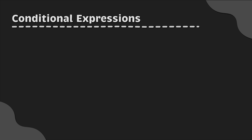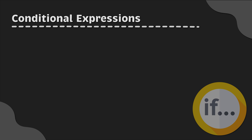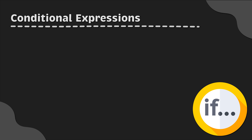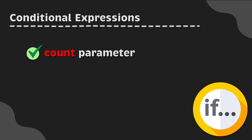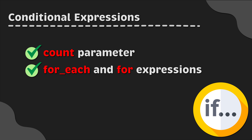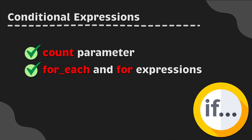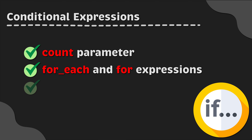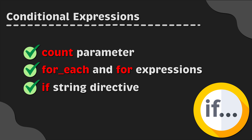Just as Terraform offers several different looping methods, there are also multiple ways to implement conditionals, each designed for a specific use case: the count parameter for conditional resources, for_each and for expressions for conditional resources and inline blocks, and the if string directive for conditionals within a string. Let's look at each one by one.